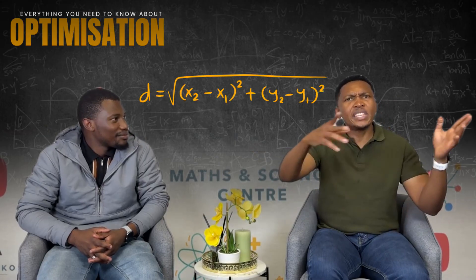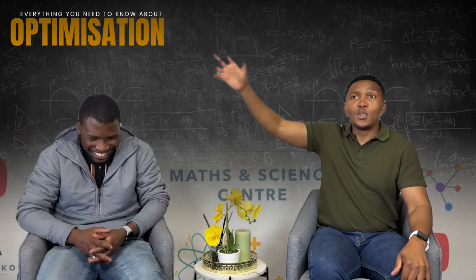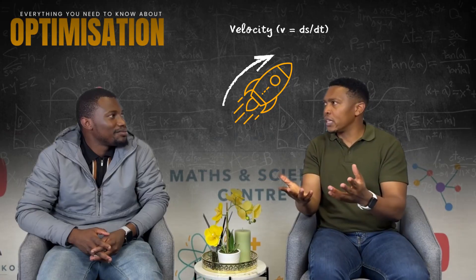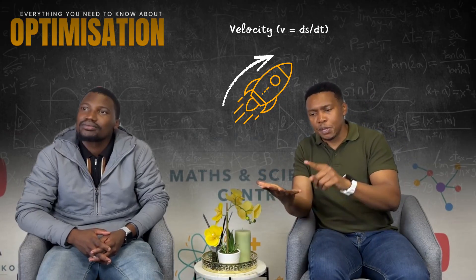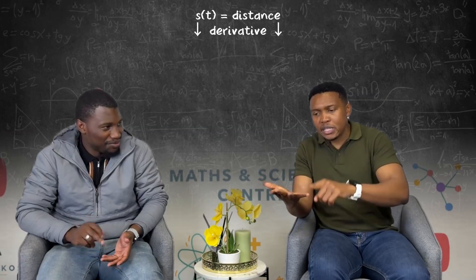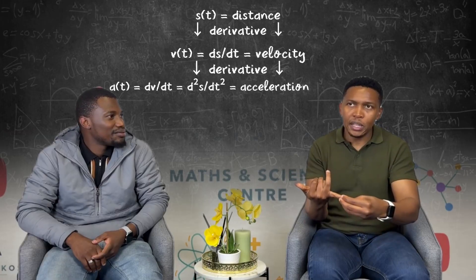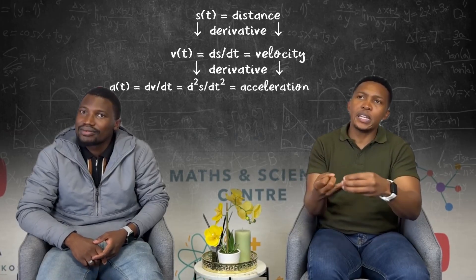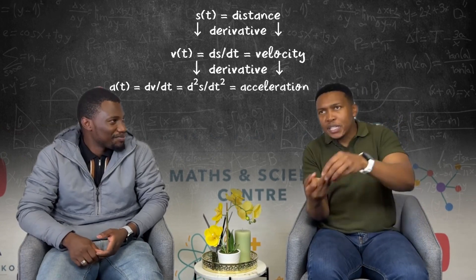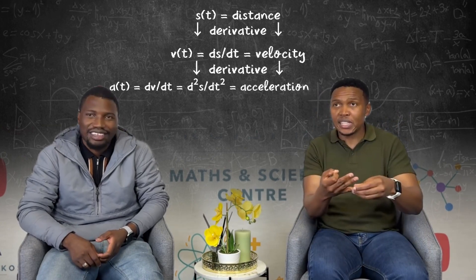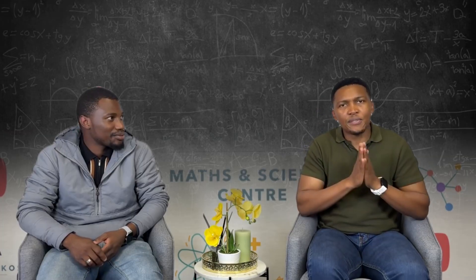Sometimes they give you a distance formula — for example, the distance a spaceship or rocket moves in space — and they want you to find the velocity. The relationship is: if you have a distance formula, the first derivative of distance is velocity, and the second derivative of distance is acceleration. So please keep that in mind.